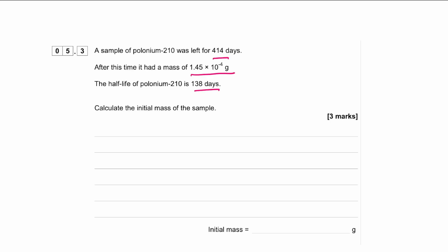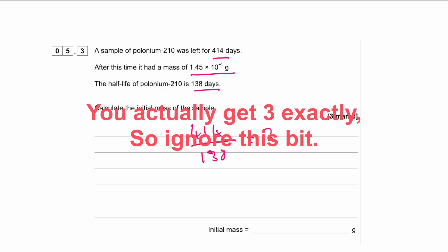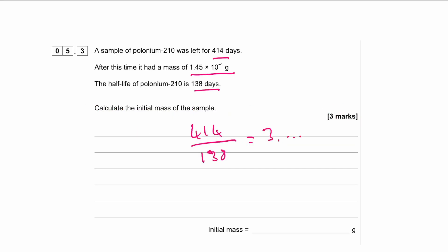The idea is that the mass of the sample will halve with each half-life — that's the definition of a half-life. With each half-life, the polonium-210 decays to something else. The sample is left for 414 days and the half-life is 138 days, so the first thing to work out is how many half-lives fit into 414 days. We do 414 divided by 138, and you'll get three — so there have been three half-lives.